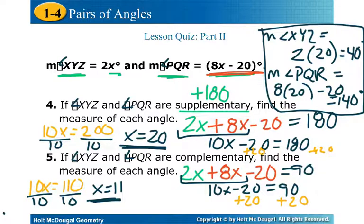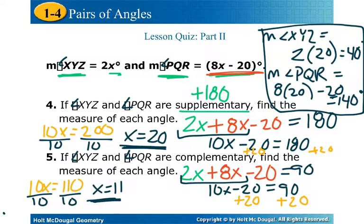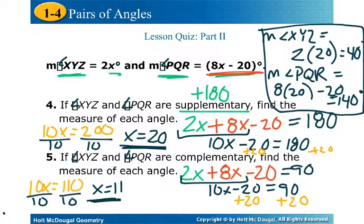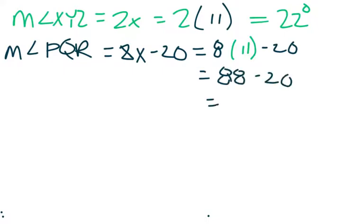That's when we're going to plug in that x of 11. Since I'm running out of room, I'll just do it on the next page. XYZ is supposed to be 2x, but we just said that x was 11, so that means the measure of angle XYZ is actually 22 degrees. The next one wants the measure of angle PQR. That is supposed to be the measure 8x minus 20. We're going to do 8 times 11 instead of x minus 20. 8 times 11 is 88 minus 20 is 68 degrees.